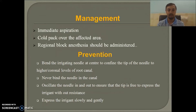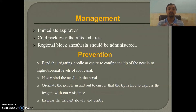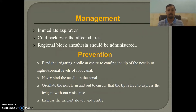When inserting the needle, note that in posterior teeth it should be 3 mm short of the working length, and in anterior teeth 1 mm short of the working length. Bend the irrigating needle at the center to confine the tip to higher or coronal levels of the root canal. Never bind the needle in the canal — oscillate it in and out to ensure the tip is free to express irrigant without resistance. Express the irrigant slowly and gently.